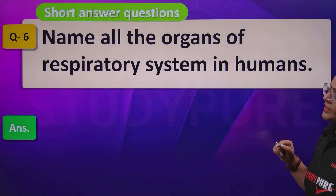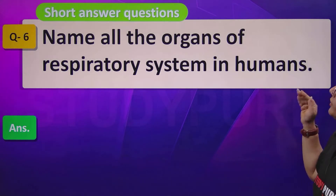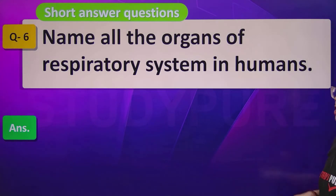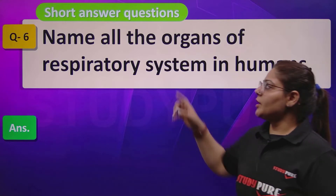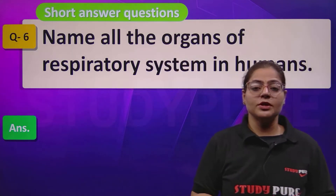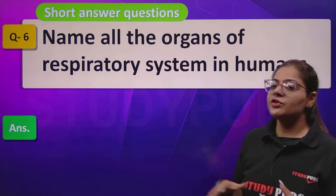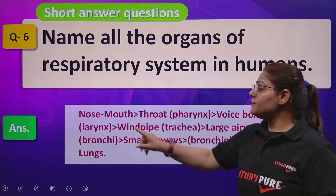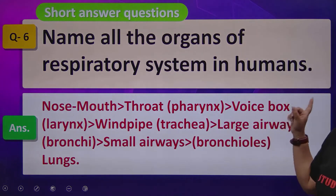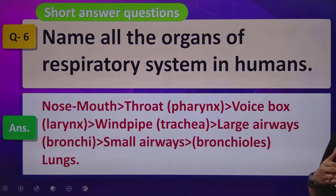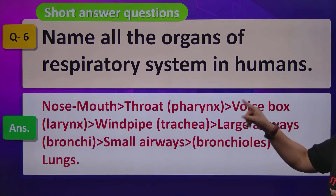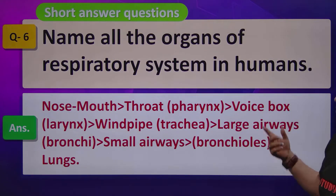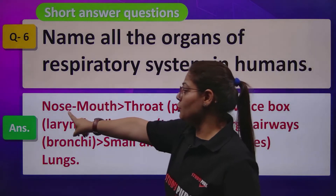Question number 6: Name all the organs of the respiratory system in humans. This is asked as a short answer type question, but sometimes the same question comes in long answer form too. In long answer, you need to explain step by step what processes are involved at each stage. So, we start with the nose.